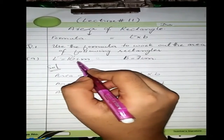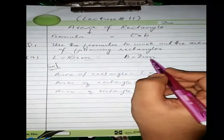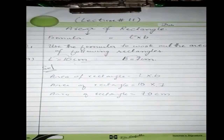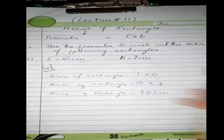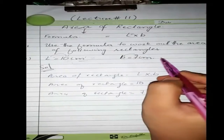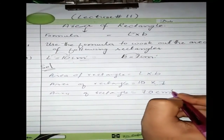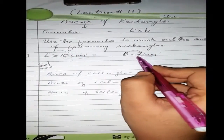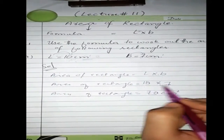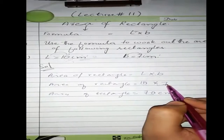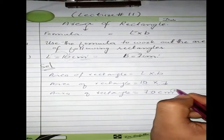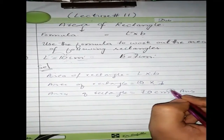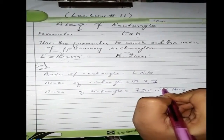Now, looking at the unit: the length is in cm and the breadth is also in cm. So the answer will be in cm squared. Why do we write square? Because we are multiplying cm by cm — two centimeter values multiplied together become cm squared. So the final answer is 70 cm squared. This is our answer for the area of the rectangle.